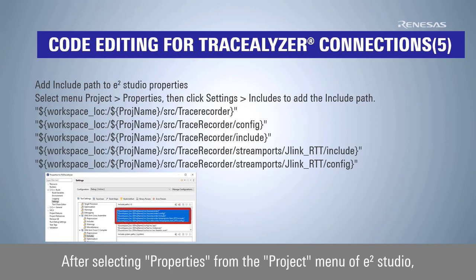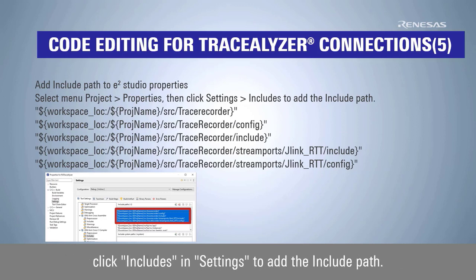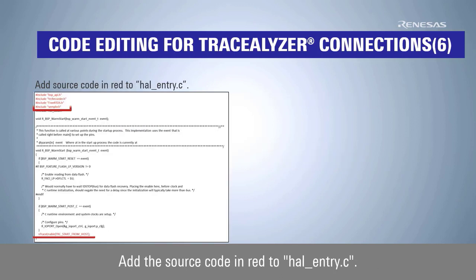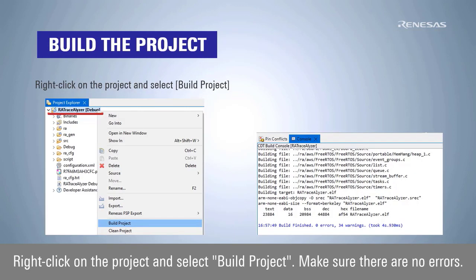After selecting Properties from the Project menu of eSquare Studio, click Includes in Settings to add the include path. Add the source code in red to hal_entry.c. Right-click on the project and select Build Project. Make sure there are no errors.